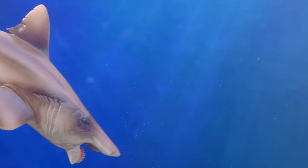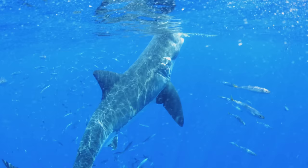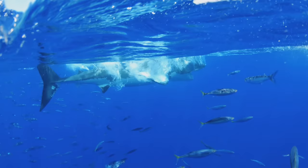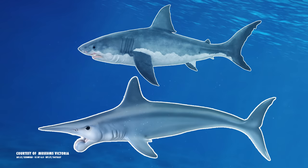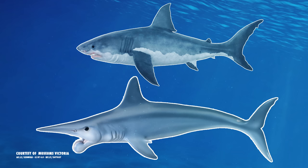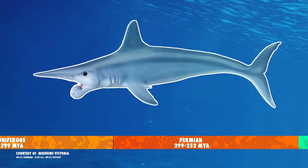Helicoprion was a huge cartilaginous fish. It was about twice the size of a great white shark, though it was much narrower by comparison and had fewer fins. Helicoprion would have swum around sometime in the Permian period, from around 300 to 250 million years ago.